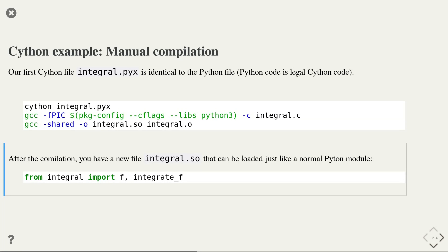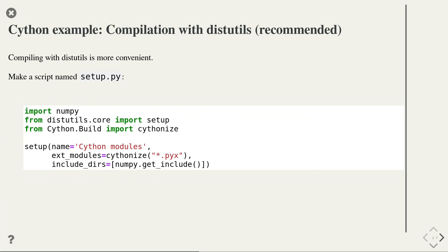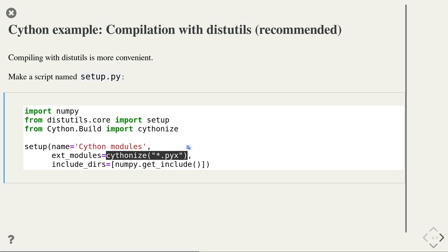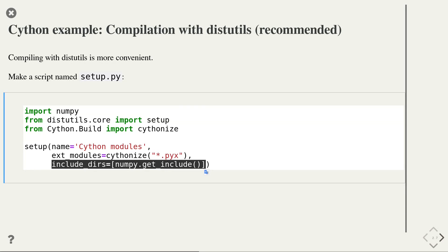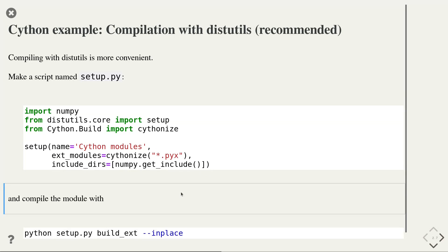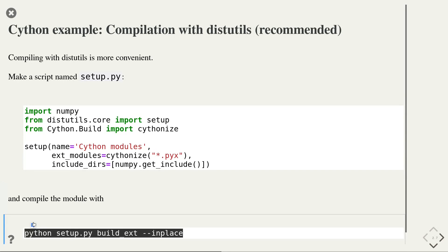After these three steps, you can launch Python and import the f and the integrate_f function from the integral module. Manual compilation is a useful exercise to understand the underlying concepts, but it is not very user friendly. A more elegant solution is to use distutils, which can compile your Cython modules automatically. To use this automatic compilation, you have to specify the Cython modules in your setup.py file. You can use the Cythonize function to automatically have all .pyx files compiled by Cython. If you also use numpy in your Cython code, remember that you have to include the necessary include directories. Once you have made these additions to your setup.py file, you can compile any Cython extensions with the command shown at the bottom.